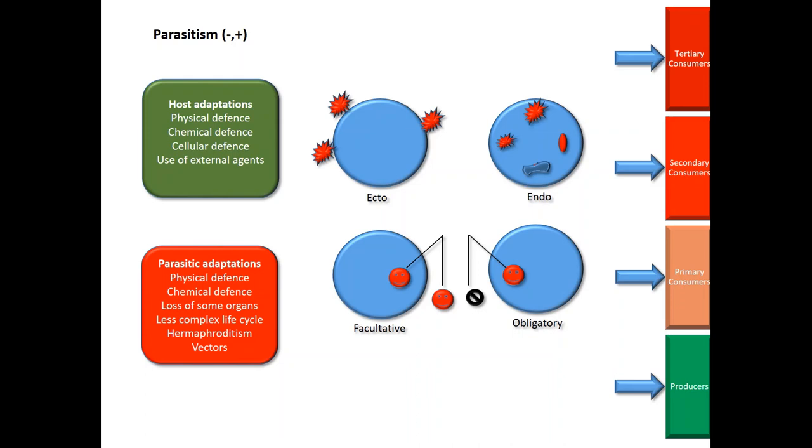There is another kind of parasitism called brood parasitism or egg parasitism. A bird called cuckoo, all of us know, is known to lay eggs in the nest of other birds. So other birds take care of cuckoo's chicks.